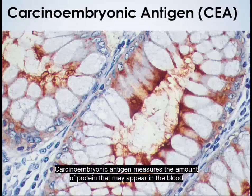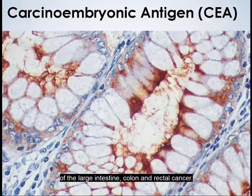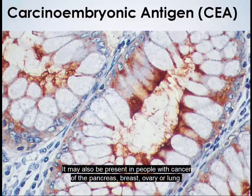Carcinoembryonic antigen (CEA) measures the amount of protein that may appear in the blood of some people who have certain types of cancers, especially cancer of the large intestine — colon and rectal cancer. It may also be present in people with cancer of the pancreas, breast, ovary, or lung.